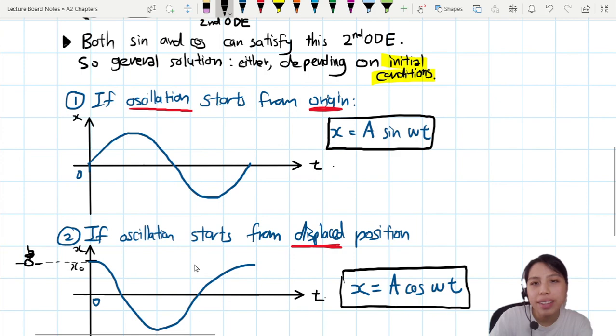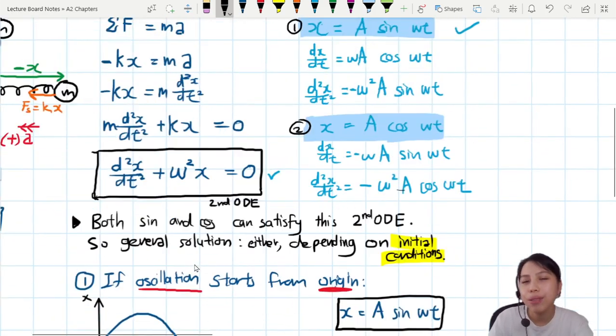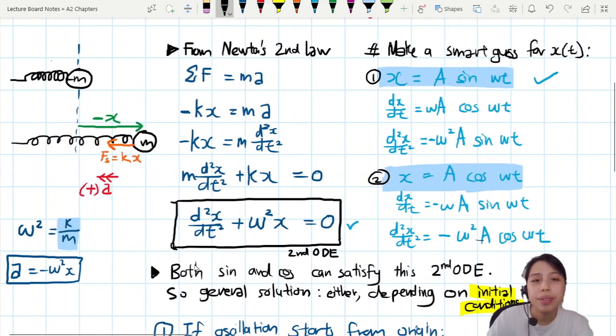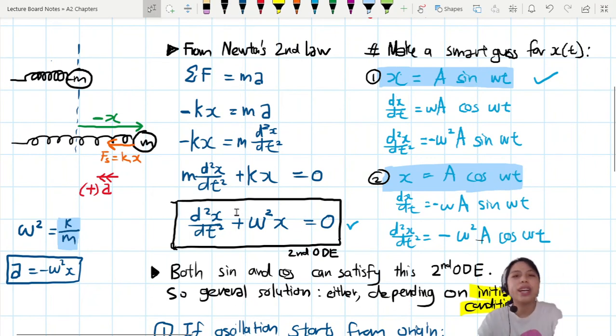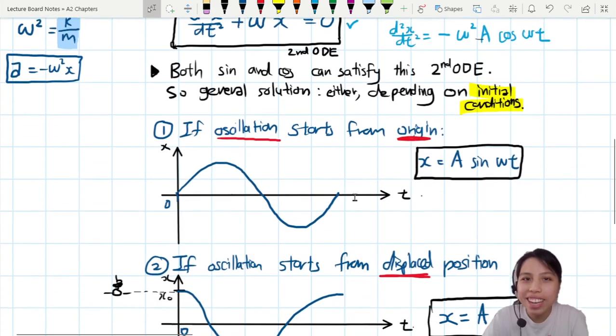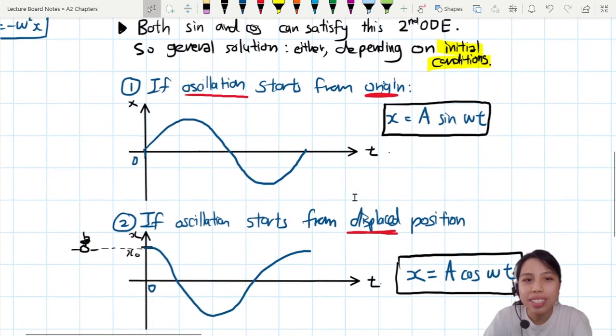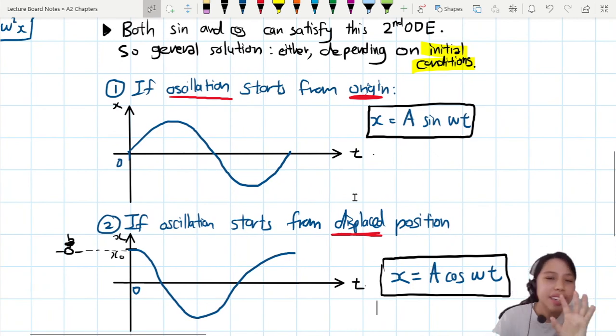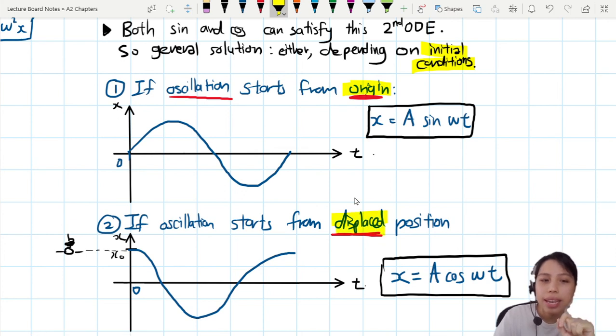But what if your oscillation starts from a displaced position, not origin anymore? Then your graph will look a little bit different because now you have to pull down the spring first. Maybe you pull it down or pull it up or whichever one. Let's say we push it up. Push it up and you have some starting oscillation position. Displace it and then you let go. So then you start to oscillate, and so on and so forth. And this is what we call a cosine graph if you start from non-zero at time t=0. So this will be x equals to A cos(ωt). And that is a difference in the initial conditions.